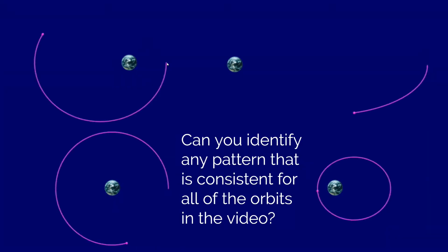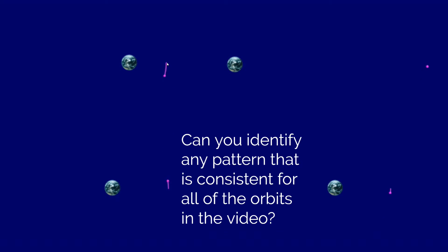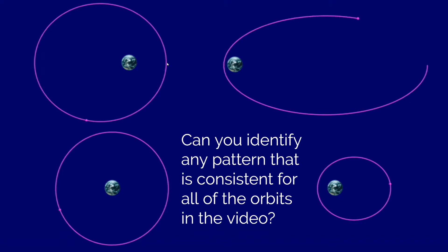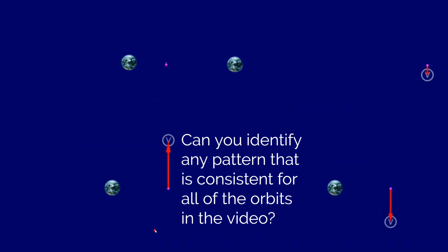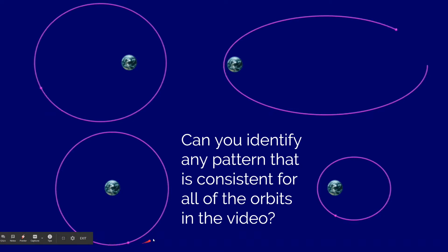Observe the orbital motion that each of these satellites undergo as they orbit the planet, and try to identify any pattern that is consistent for all of the orbits shown. You should be able to notice that in the lower left-hand corner, this orbit is essentially a circular orbit, consistent with what we've discussed previously — uniform circular motion — where the orbital speed, or tangential velocity of the satellite, stays the same.